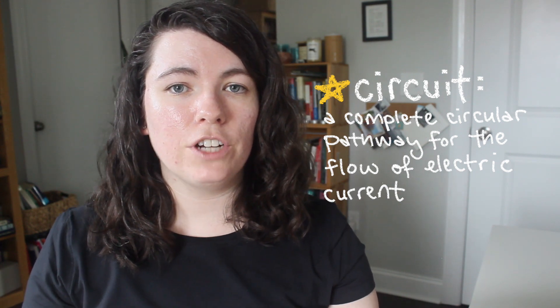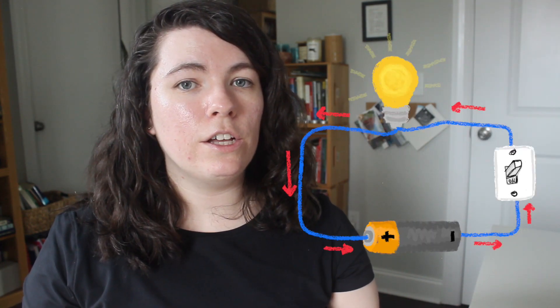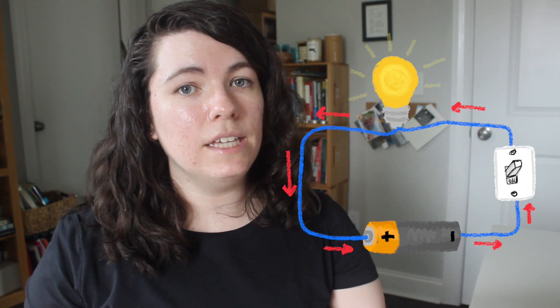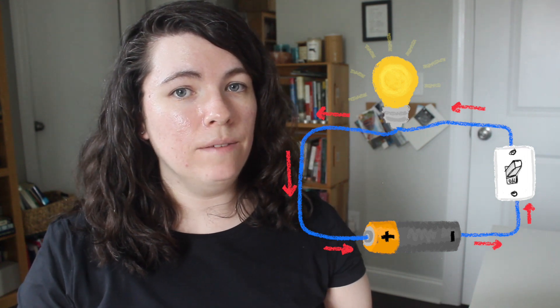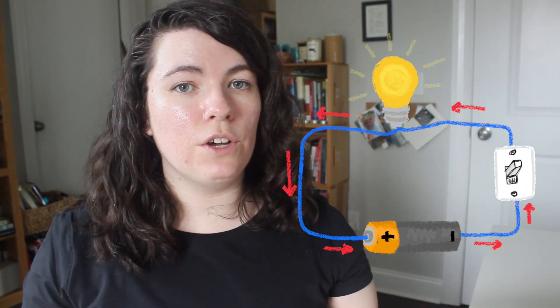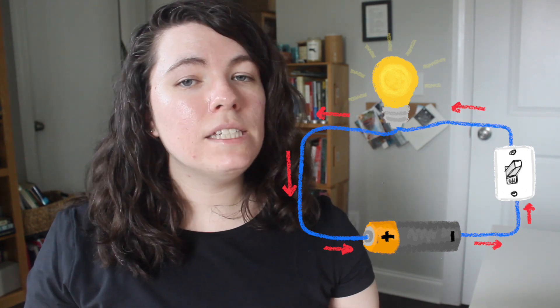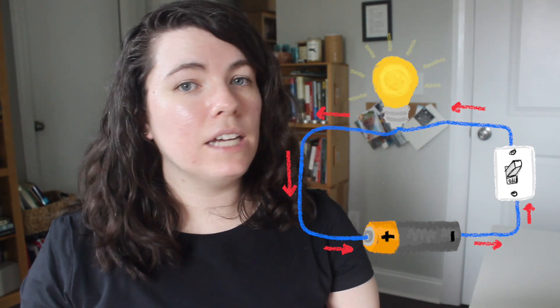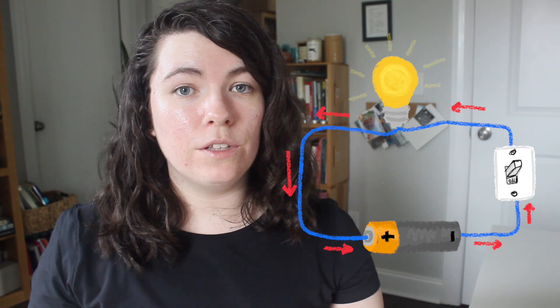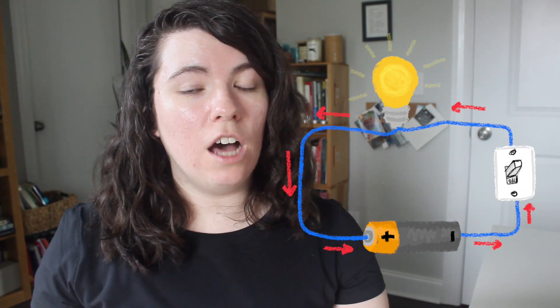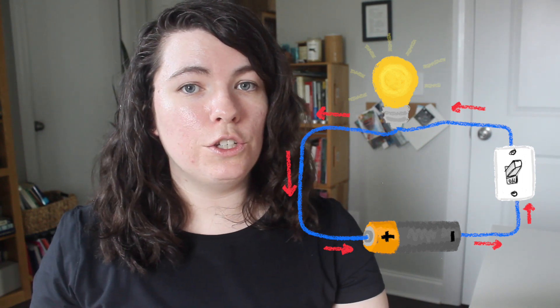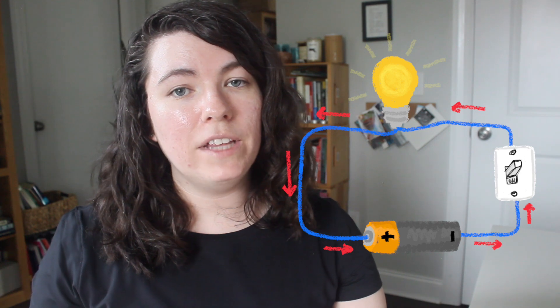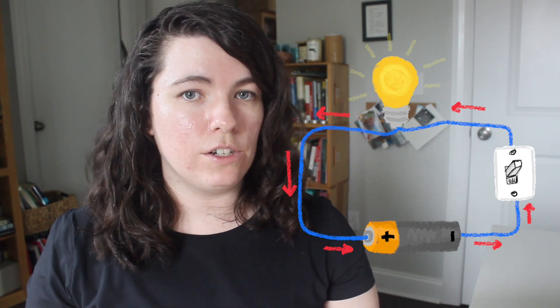A circuit is a complete circular pathway for the flow of an electric current. A simple circuit could include a source of electricity like a battery, something for the electricity to flow through like a wire, and something that is powered by the electricity like a light bulb. A circuit may also include a switch that can be turned off in order to interrupt the flow of electricity by breaking the circuit.